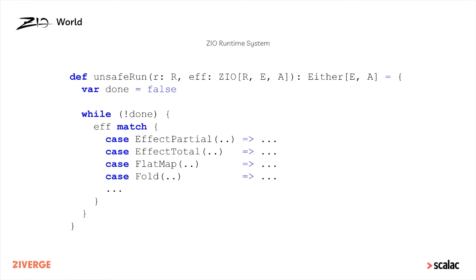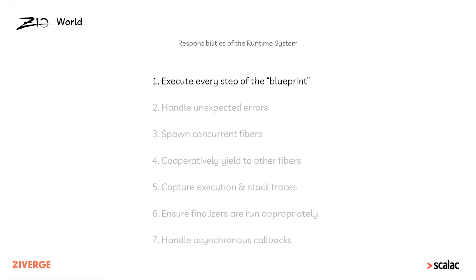This is the means by which ZIO gives you all these rich benefits around parallelism, concurrency, and resource safety. Inside this while loop it's able to do all of these other things that you would have to do manually if you were building this program using java.util.concurrent or straightforward procedural Scala. ZIO can give you all this extreme power and strong guarantees because of the runtime system.